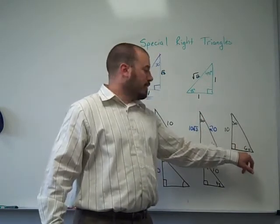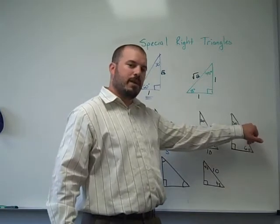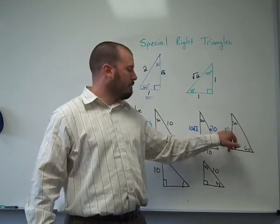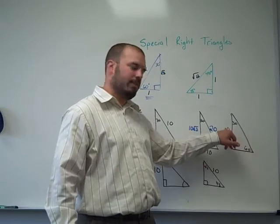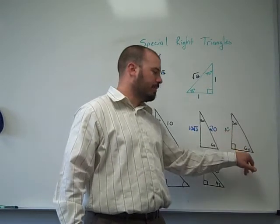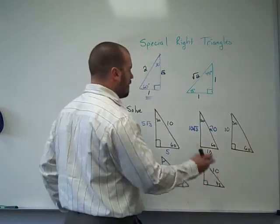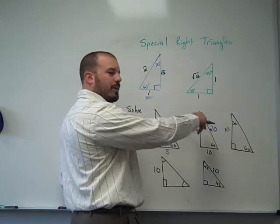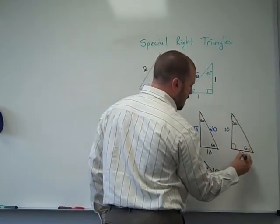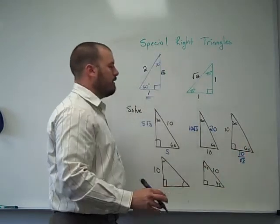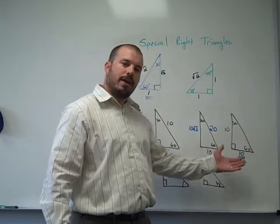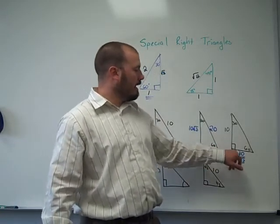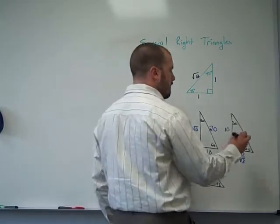For the third problem, I need to use the side opposite of 30° as my starting point, but I don't know it directly. If I knew it, I would double it to get the hypotenuse and multiply by √3 to get the side opposite of 60°. So I just have to think in reverse — I'm going to divide by √3 to get the side opposite of 30°. So that would be 10 divided by √3. Then I'll double that to get the hypotenuse.